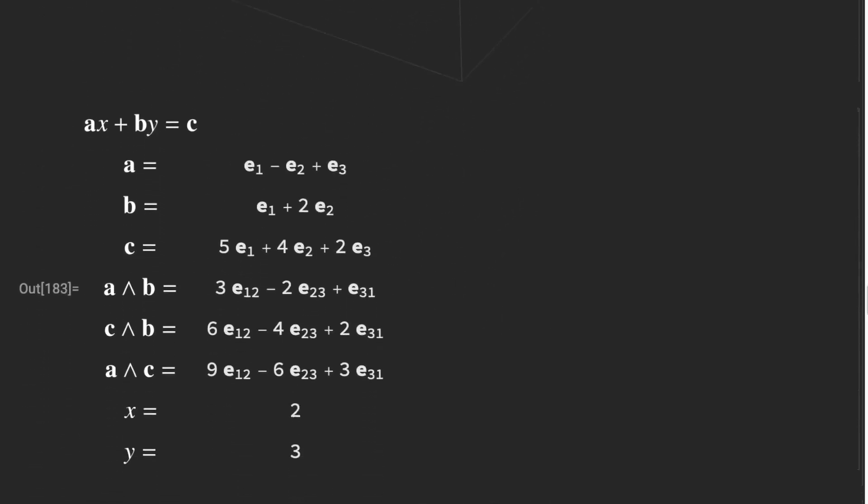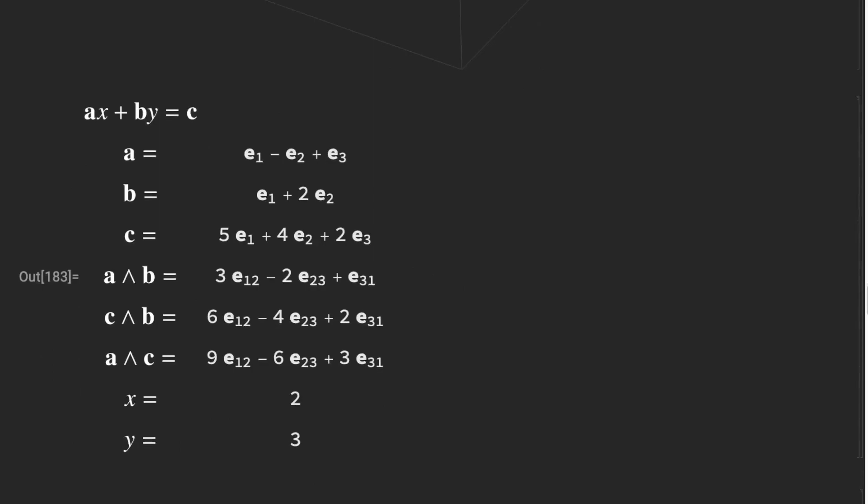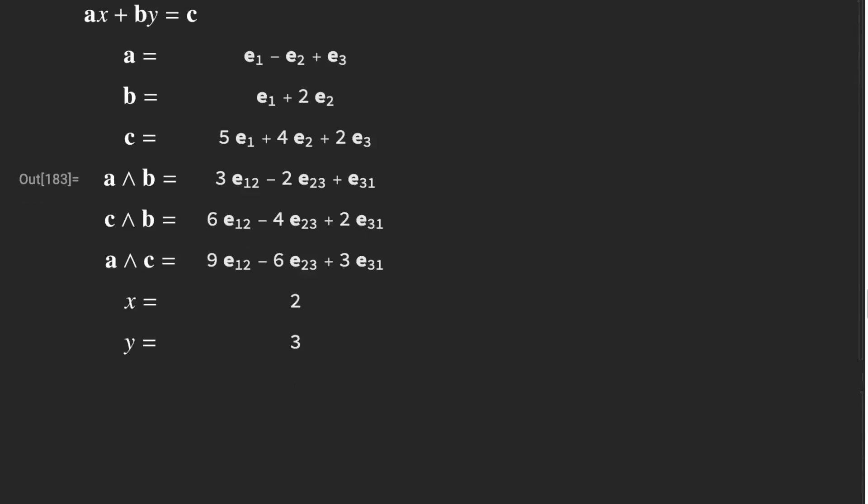That solution, in this case, so we add, here's our a, b, c's reiterated, and our wedge products. And now in this case, our a, b wedge product is 3 times e1, 2 minus 2 e2, 3 plus e3, 1. And we see that each of our vectors, our bivectors are our scalar multiples of each other, of that a wedge b bivector. We expect that because this is, it was constructed as an exact system. So we have two times and three times the a wedge b bivector in each case. So we find our solution is x equals 2 and y equals 3, as we expected.